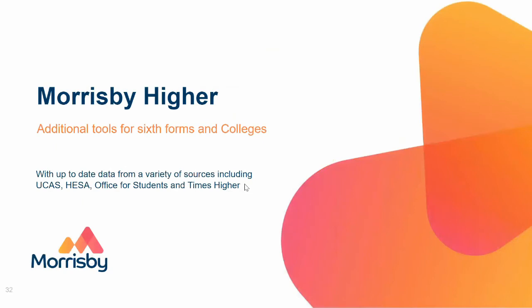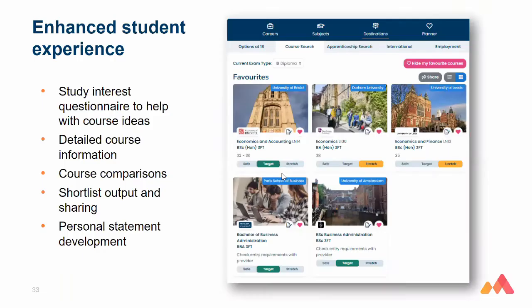I'm going to touch on Morrisby Hire slightly. It is an add-on product you can purchase — I'll go through prices towards the end. It's used in sixth forms and allows students to look at where they can go post-18. It's an enhanced student experience with course information in detail, allowing students to select multiple courses, compare them, and delve into university information to find out more.